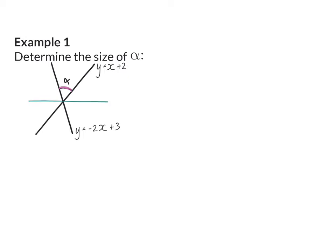So I've now added a horizontal line, and now I can use my inclination angle formula to calculate two different angle sizes. If I focus on my first straight line y equals x plus 2, I can calculate its inclination angle. Let's call that theta. I can also calculate the inclination angle of the second given straight line, and let's call this angle beta.